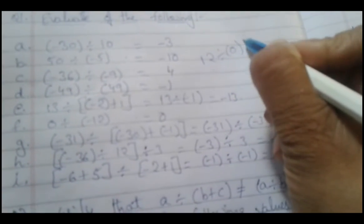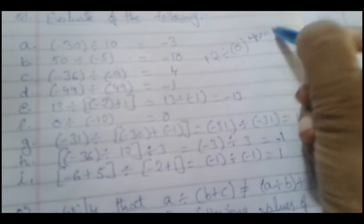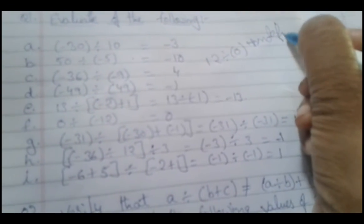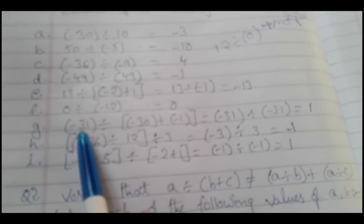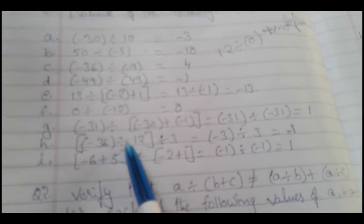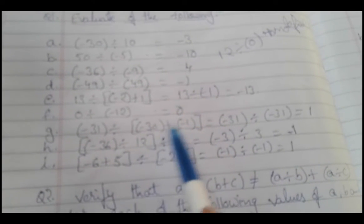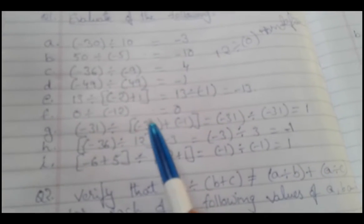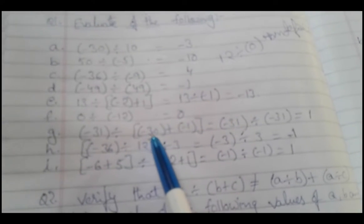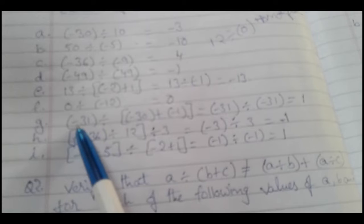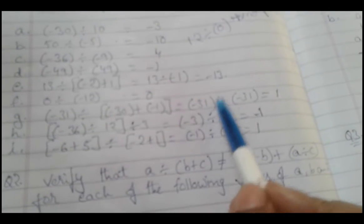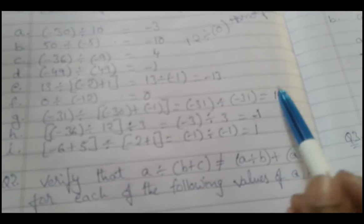In part (g), minus 31 divided by (minus 30 plus minus 1): both terms inside the bracket are negative, so we add them — minus 30 minus 1 gives minus 31. So we have minus 31 divided by minus 31. Both are negative, so we get a positive integer, which is 1. You can observe the remaining parts similarly.